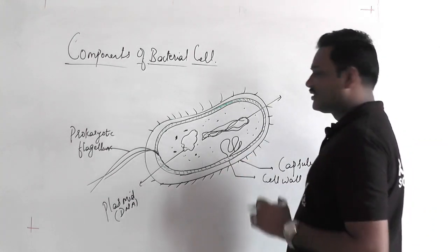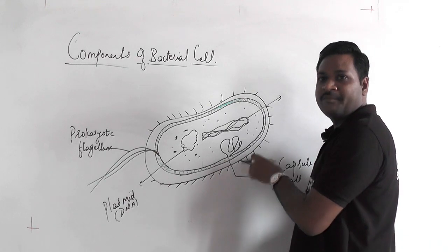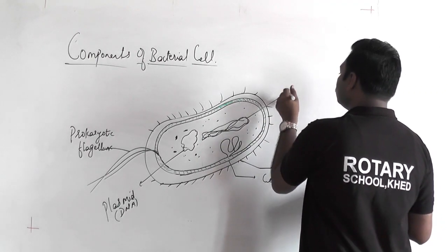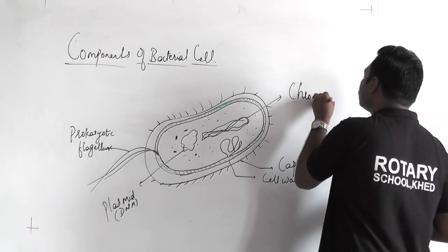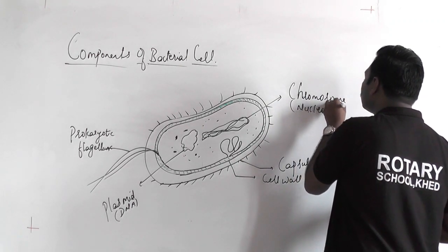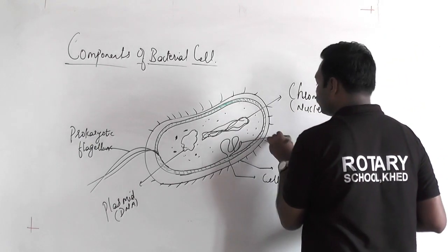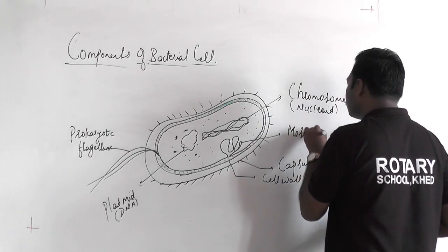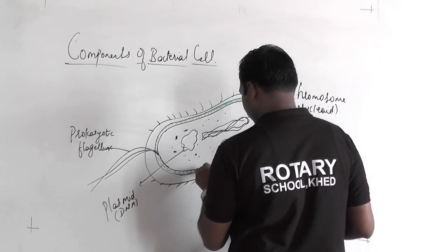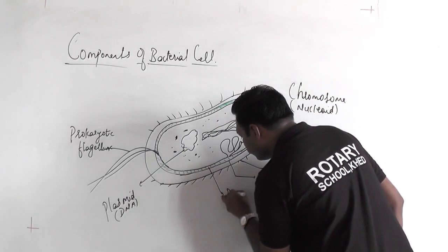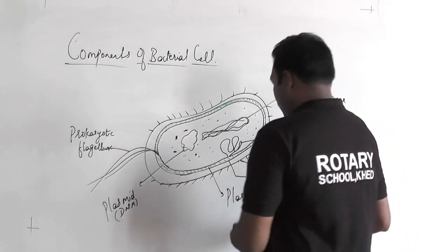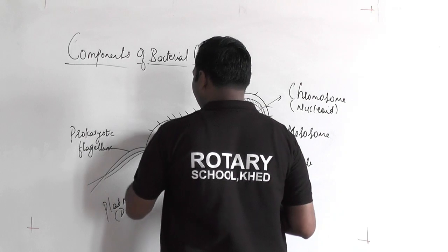Students, today we are going to label a few more characteristic features and then discuss about them. Please draw the diagram and label it. The first structure to note is the plasma membrane, and next there is a presence of ribosomes.